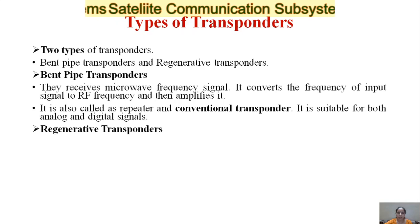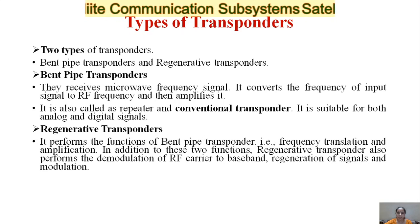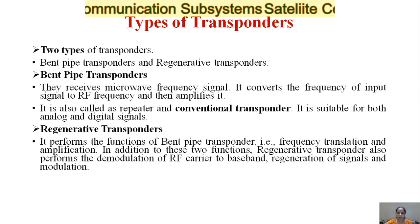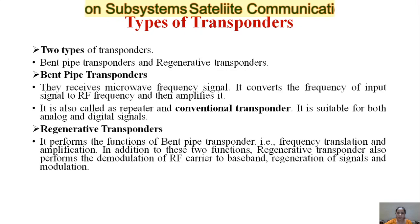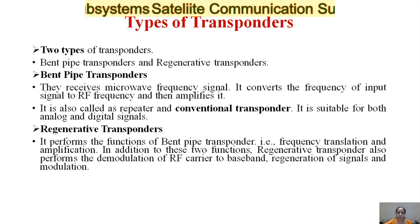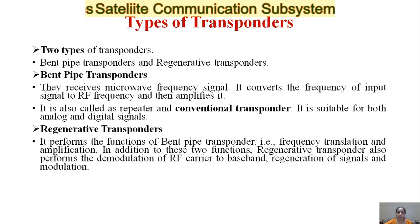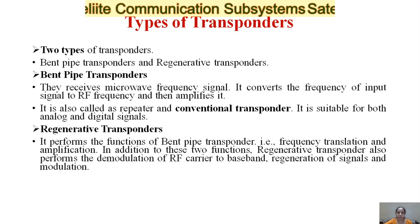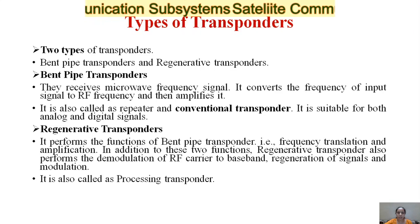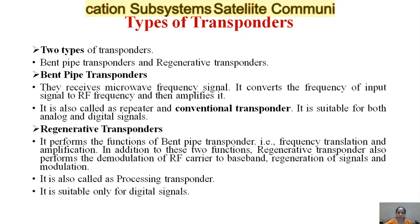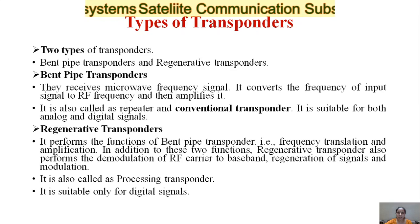The second type is the regenerative transponder. It performs the same functions as the bent-type transponder — frequency translation and amplification — but in addition also performs demodulation of the RF carrier to baseband, regeneration of signals, and modulation. It is also called a processing transponder and is suitable for digital signals only.